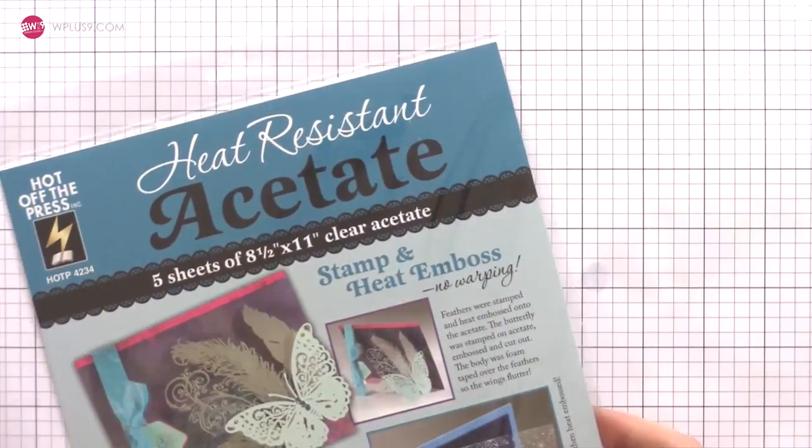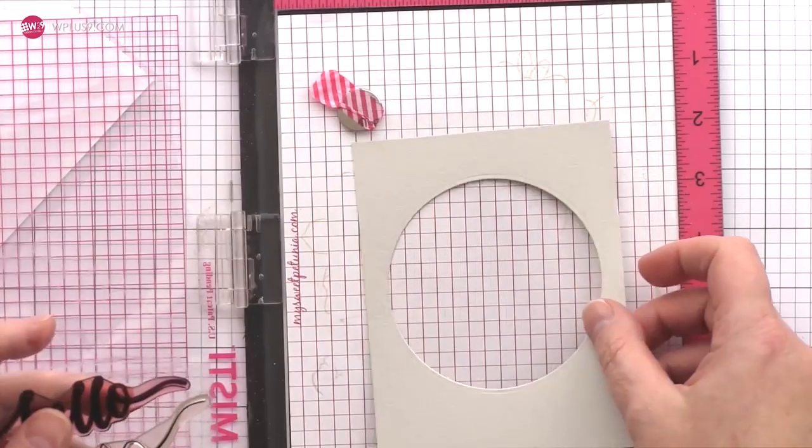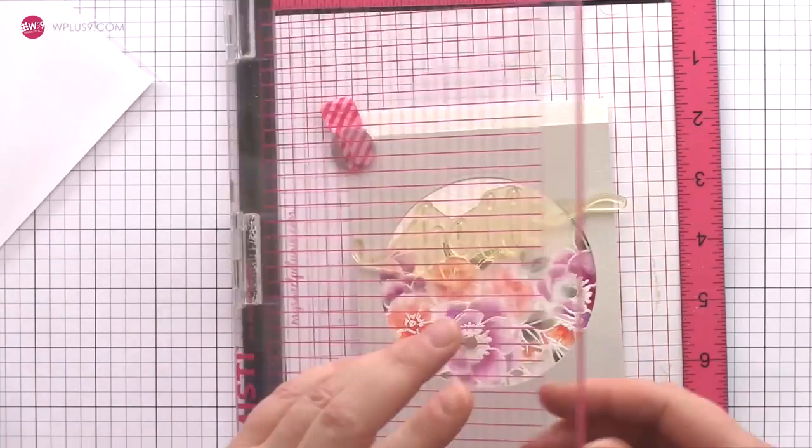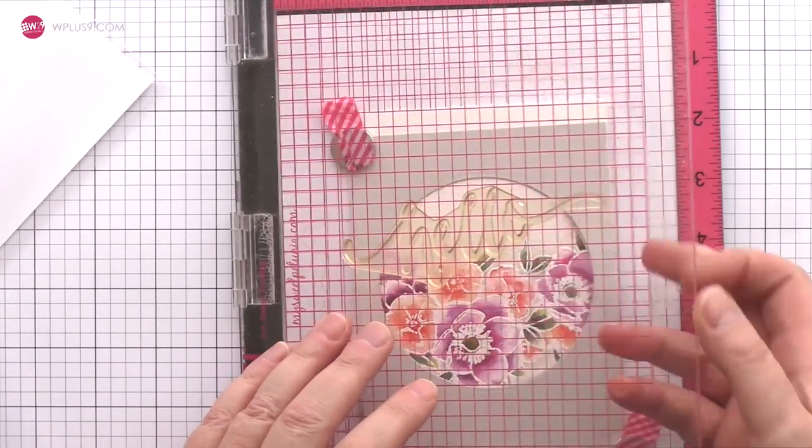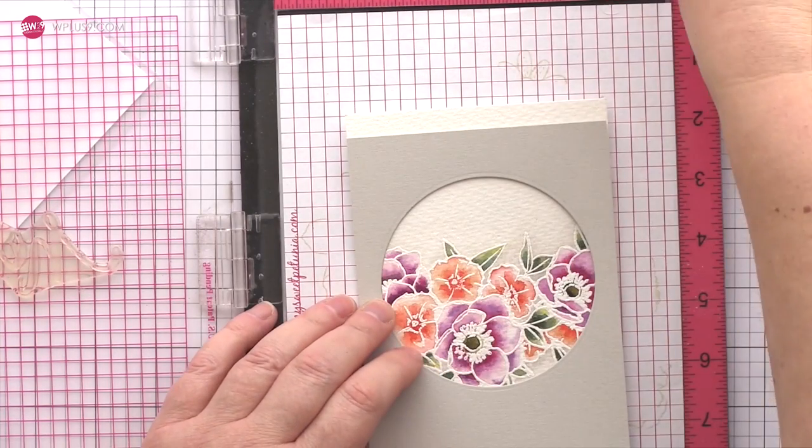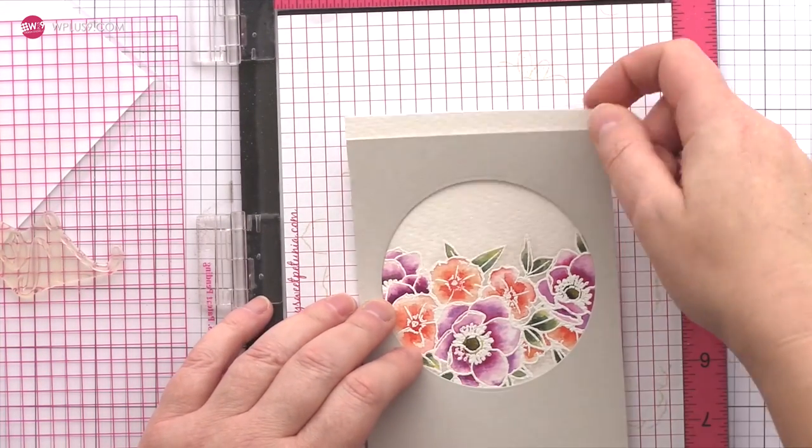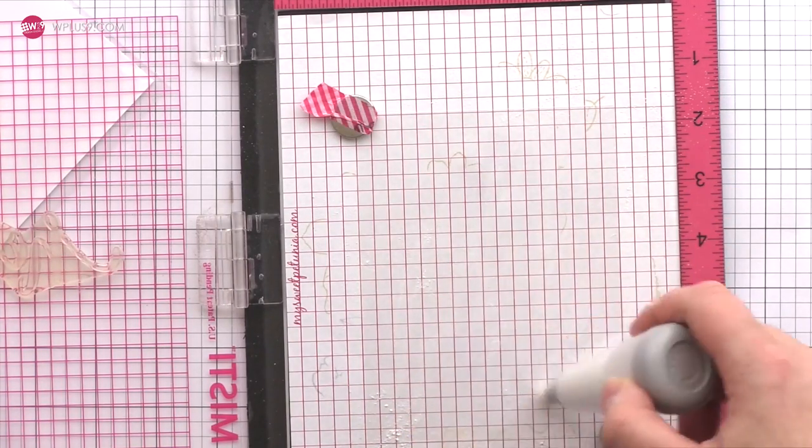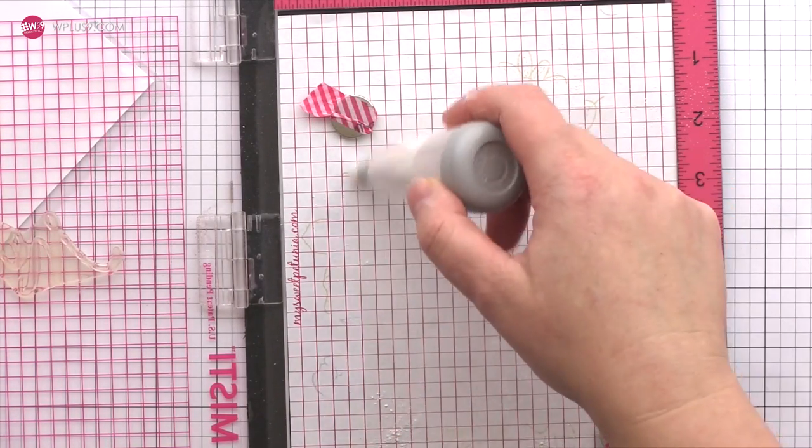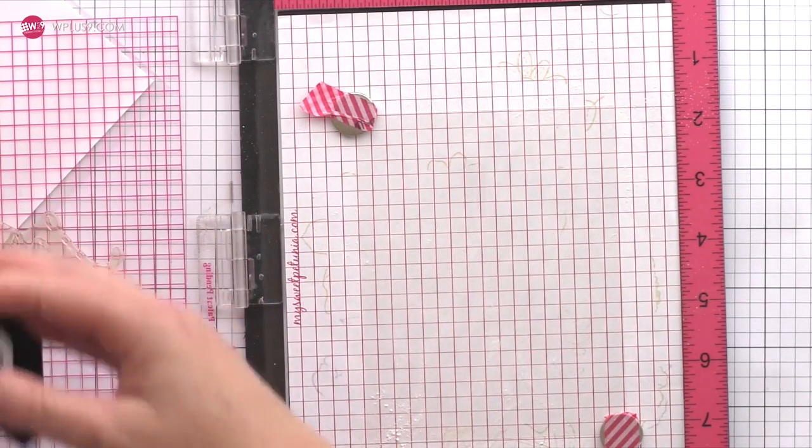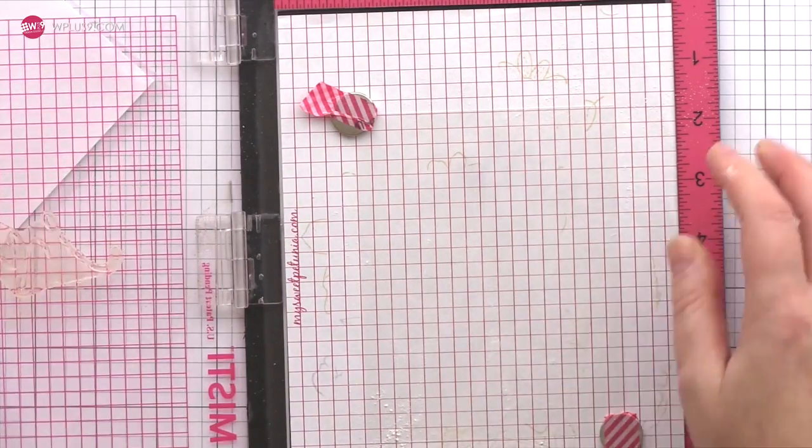I'm going to be heat embossing part of the sentiment on the acetate over the front of the shaker and so I'm using heat resistant acetate from Hot Off The Press. Although you can barely see it in the video I've placed a piece of acetate in the MISTI and then using the elements of the card to work out where I want to stamp the sentiment. I'm going to use the hello from the hand lettered hello set and having lined everything up I'm thoroughly treating the acetate with powder tool to prevent embossing powder sticking where I don't want it to. I'm using embossing ink and then pressing down firmly on the acetate.